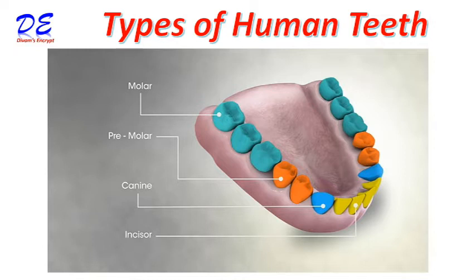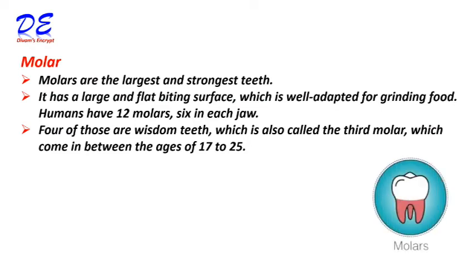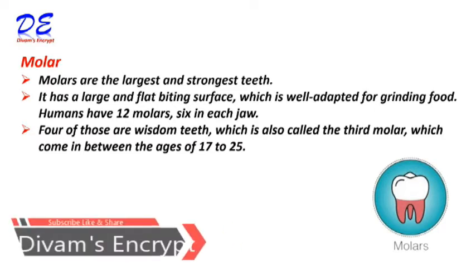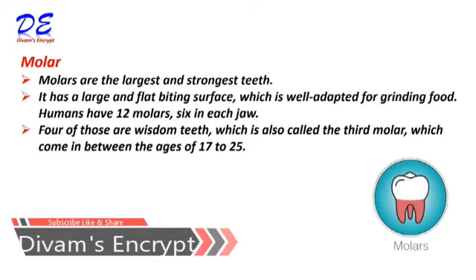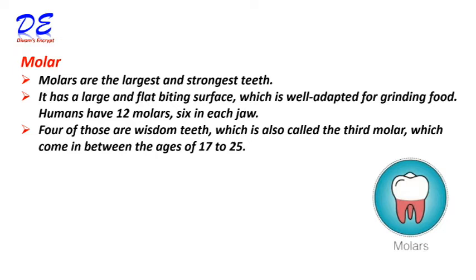Molars are the largest and strongest teeth. They have a large and flat biting surface which is well adapted for grinding food. Humans have 12 molars — six in each jaw.